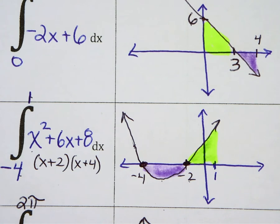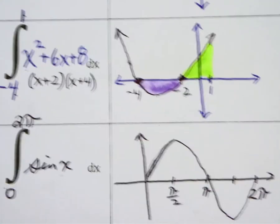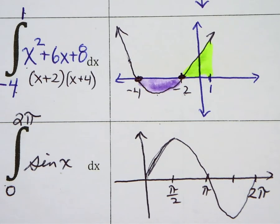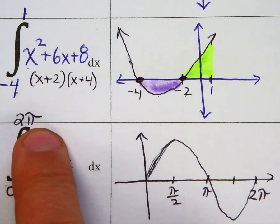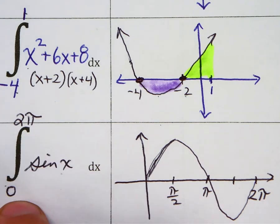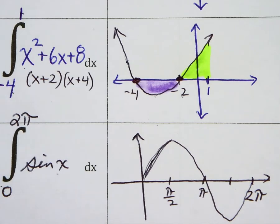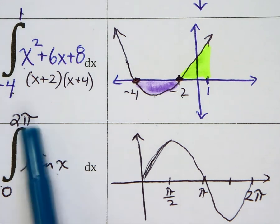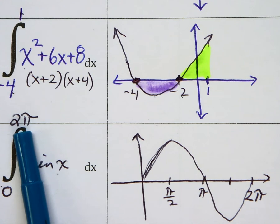And the same is true for a sine curve. In this case, the upper bound is two pi and this is zero. And if you're doing this with a graphing calculator, make sure your calculator is in radian mode. That's two pi radians. So sine starts at the origin here.